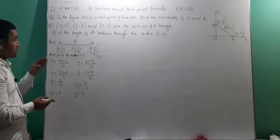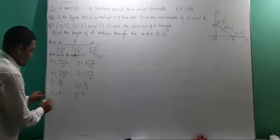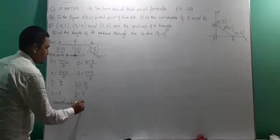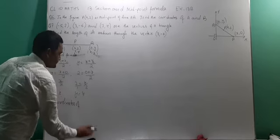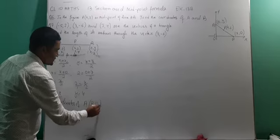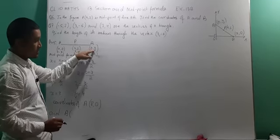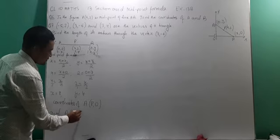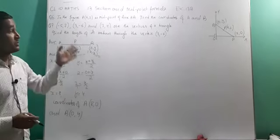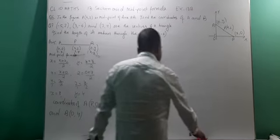Now solve this to get the value of x. We have 4 equals x divided by 2, and 2 equals y divided by 2. By cross multiplication: 1 into x is x, 2 into 4 is 8. Then 1 into y is y, 2 into 2 is 4. Now we got the value of x and y. Therefore, the coordinates of A are x comma 0, which is 8 comma 0, and B is 0 comma y, which is 0 comma 4.